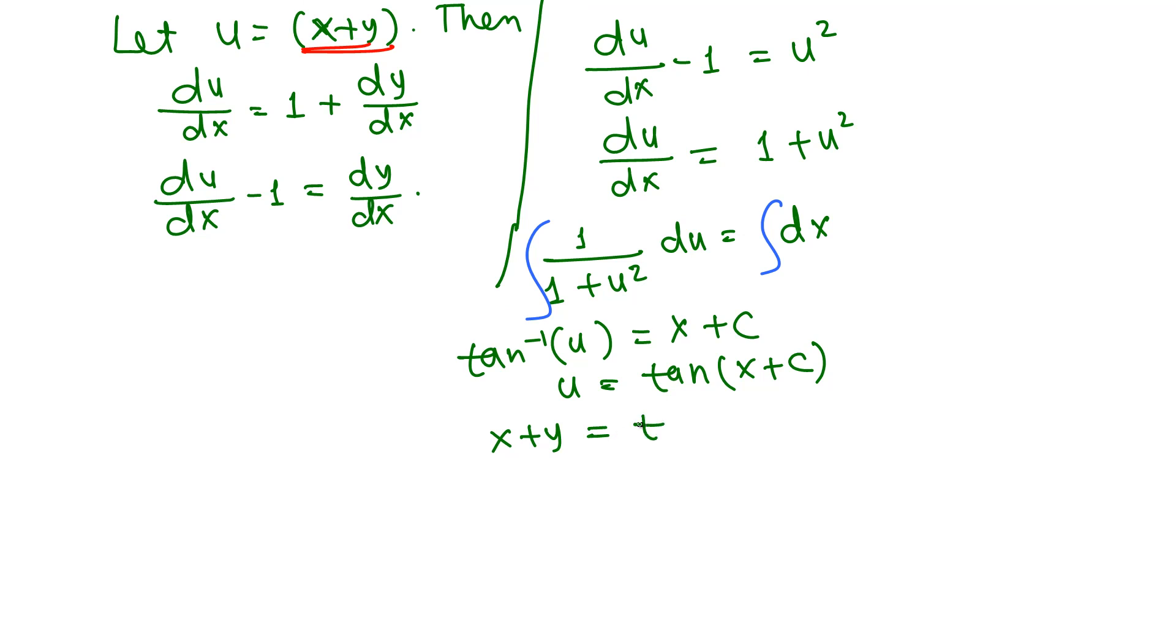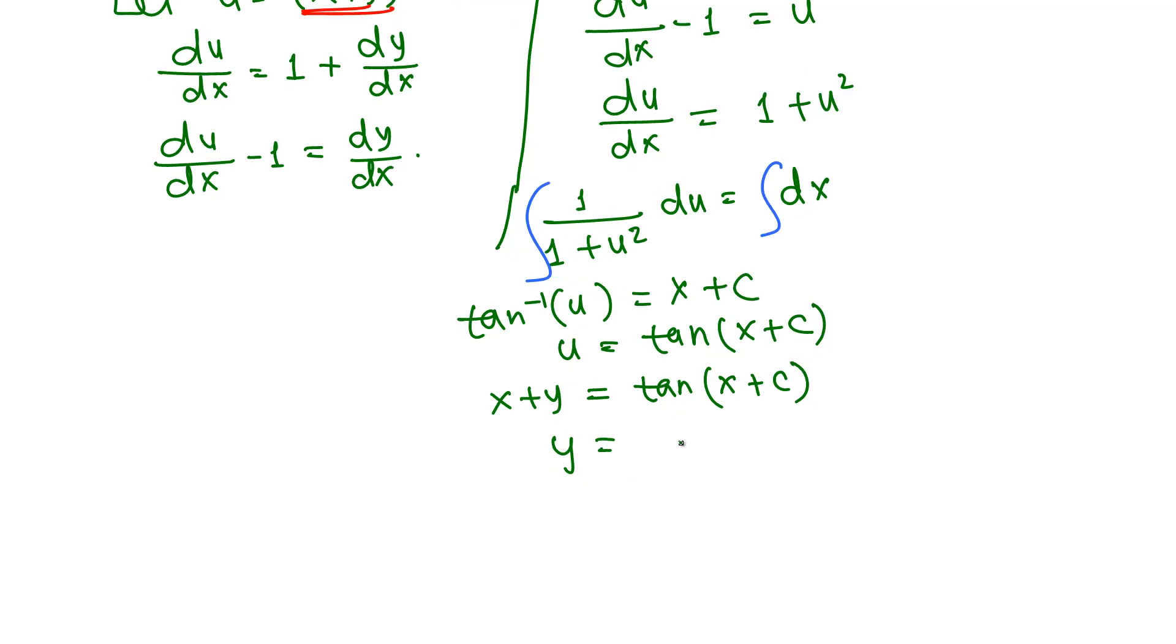We don't need to write quantity, just x + y equals tan(x + c). This is the solution. We can subtract x from both sides if you want to write explicitly, which is possible in this case. So y equals tan(x + c) minus x.